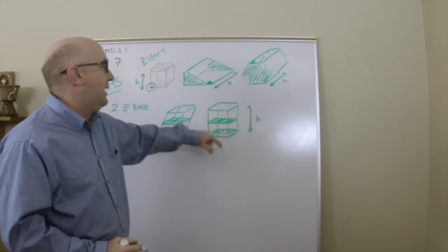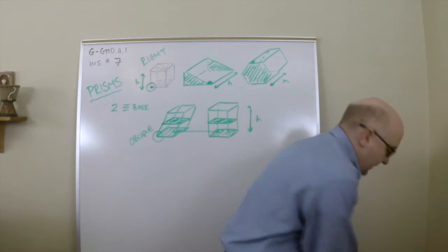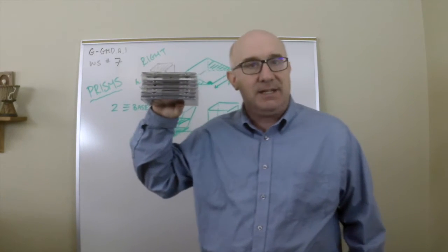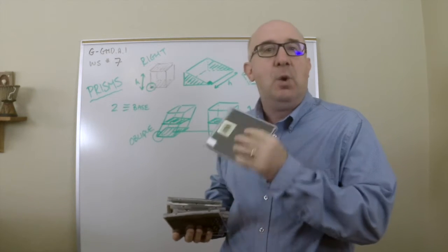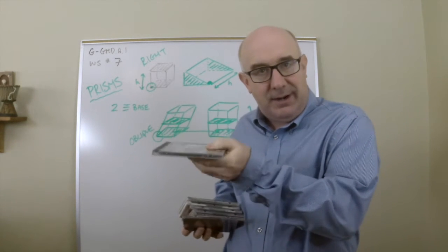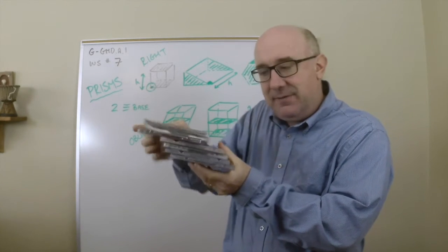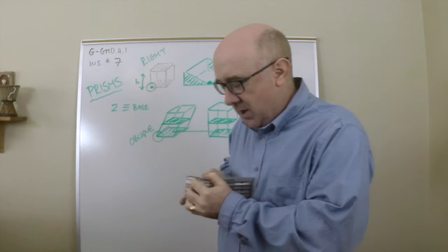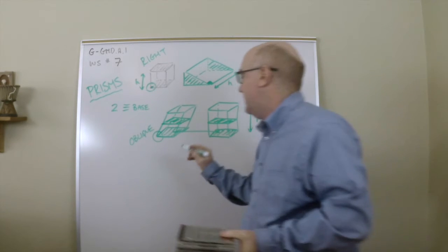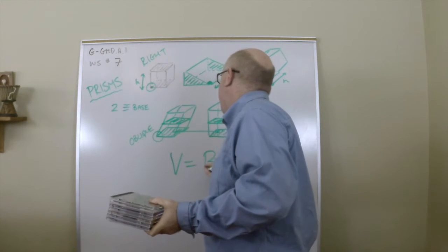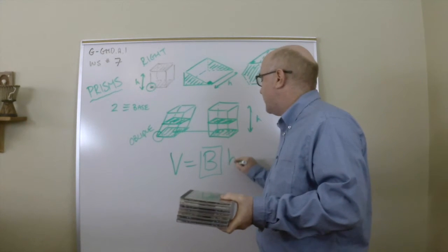If I took a cross sectional cut right here and that matched the area of the cross sectional cut right here and they keep stacking, you get the same volume. Here are a couple of visual effects of that. Here's a stack of CDs, of CD cases. This would be the idea of stacking: find one area and then multiply it by the stacking of all of those together.